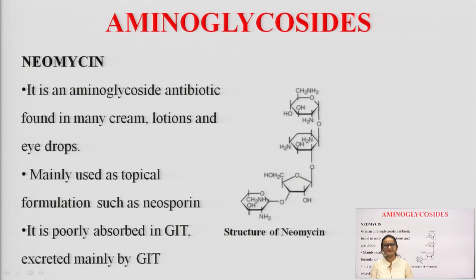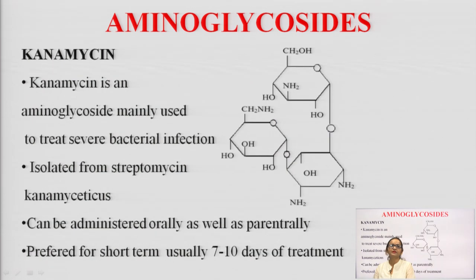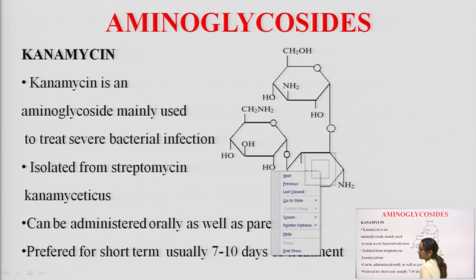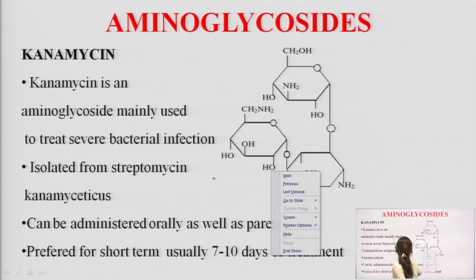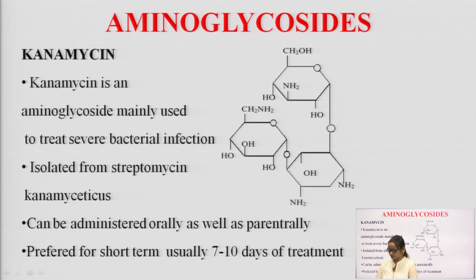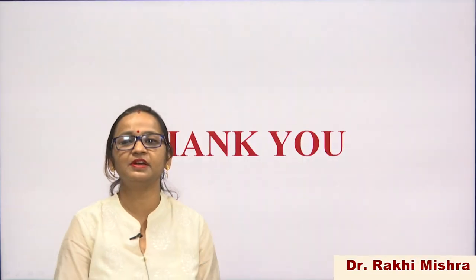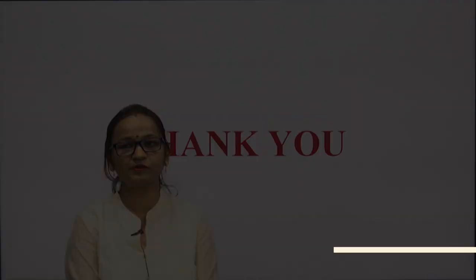Neomycin is a topical aminoglycoside. Kanamycin (canamycin) is a systemic aminoglycoside; in its structure, two sugar molecules are joined to the aglycon moiety via glycosidic linkage. This concludes the lecture on aminoglycosides.